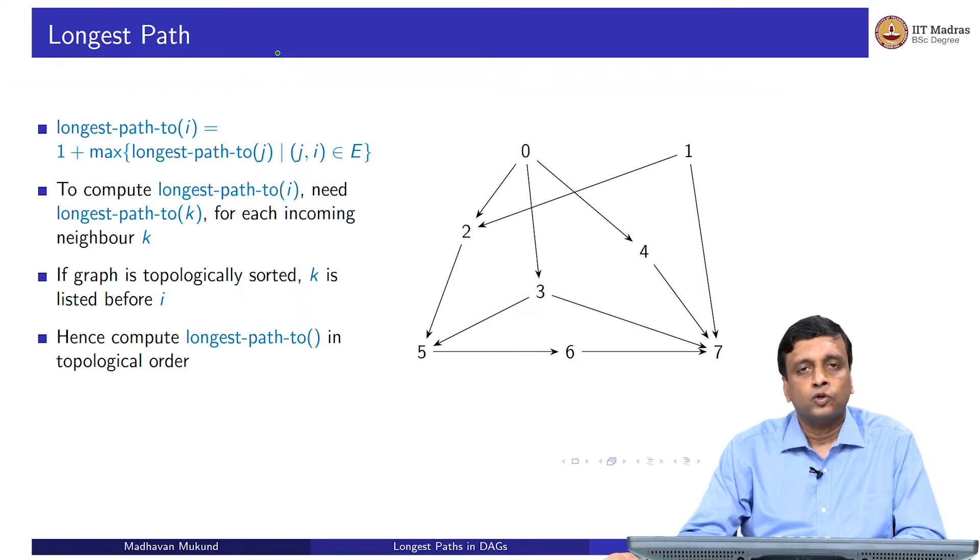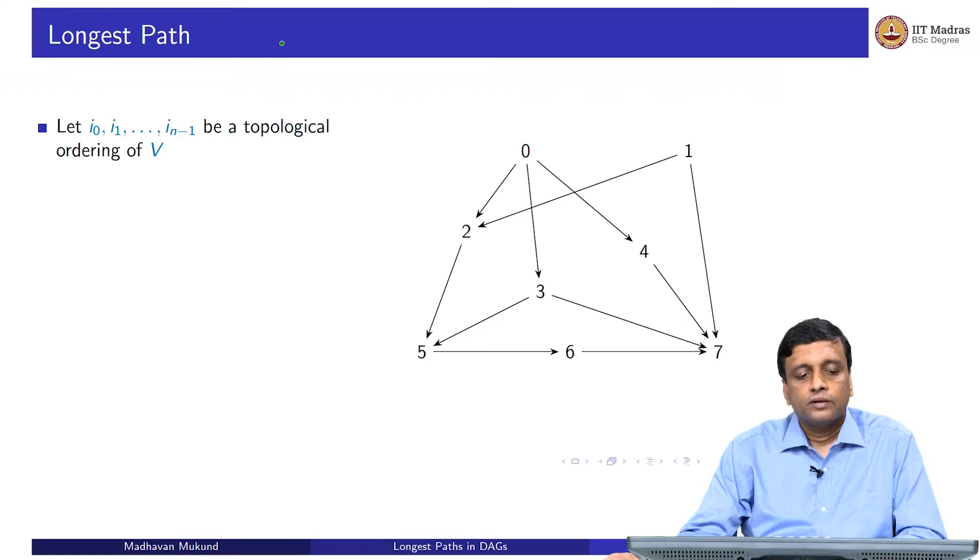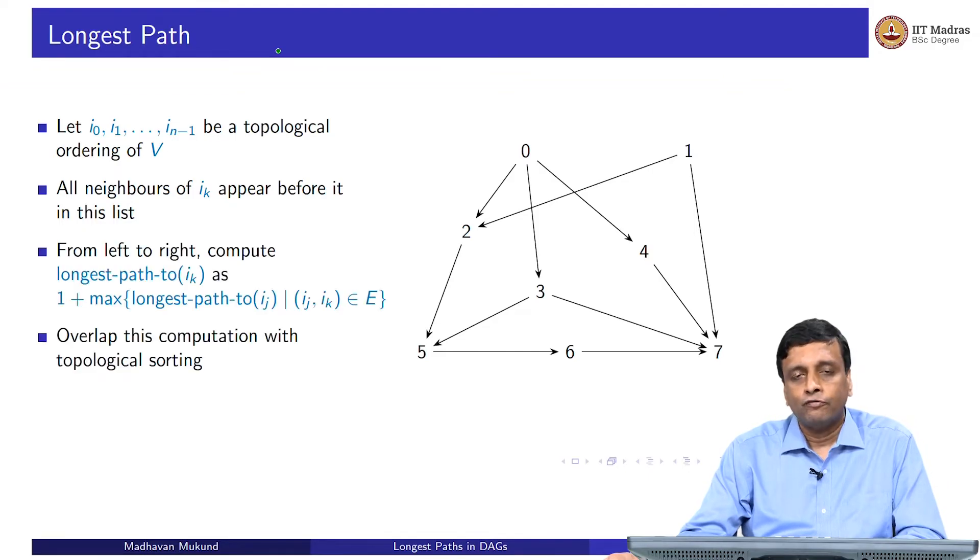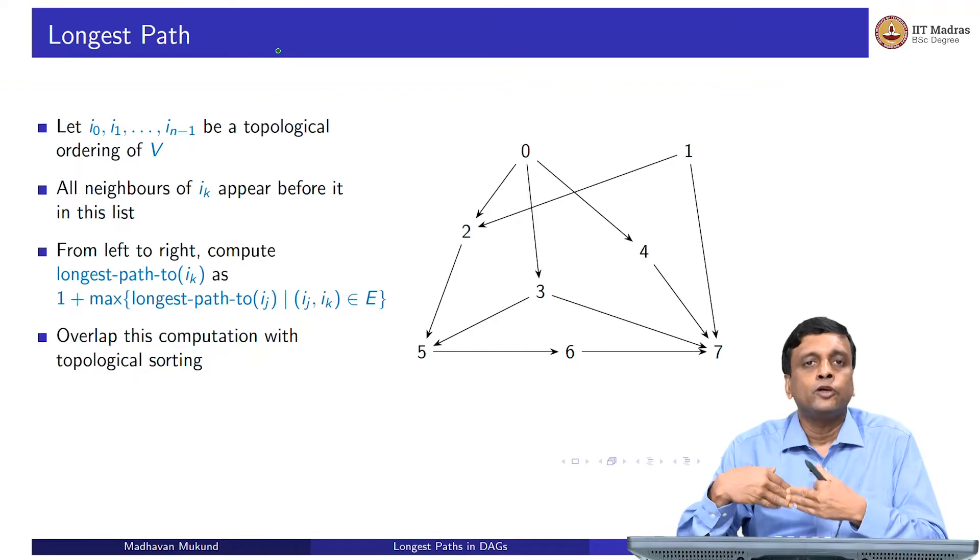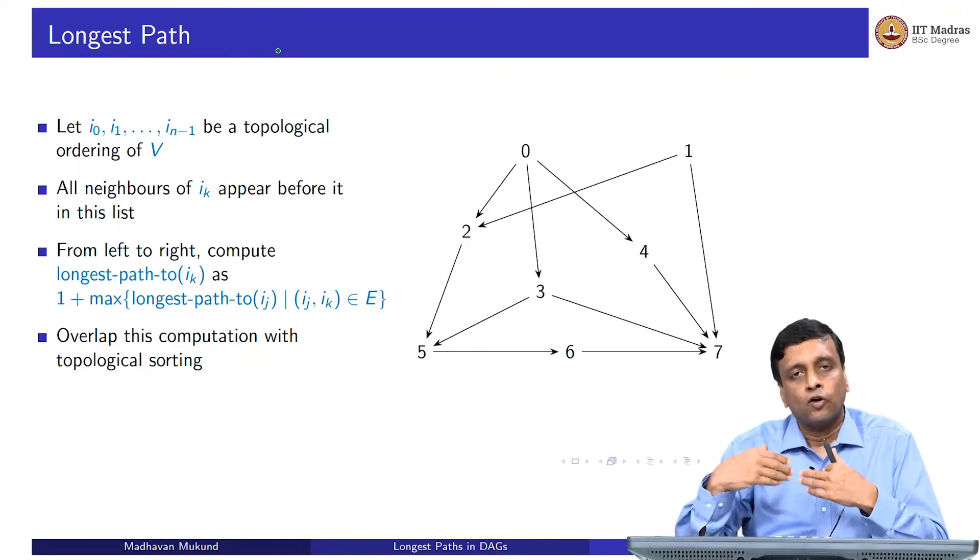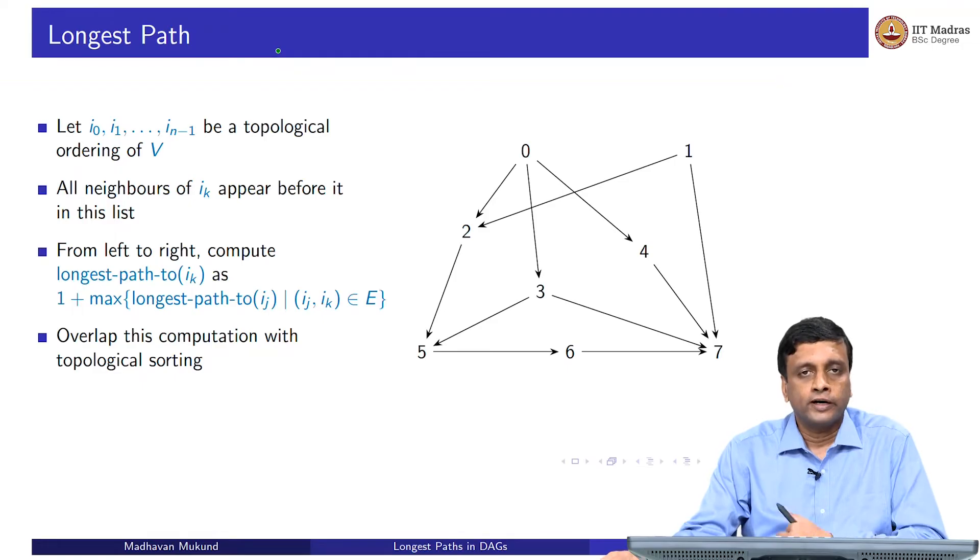What we will do is compute longest path in the topological order. Let us assume that we have some topological ordering of our vertices. Then we know that every vertex in this list has all its neighbors appearing before it. We can go from left to right and do this. We do not have to first compute the topological order and then scan it again. As we are computing the topological order, at any inductive point, everything that I depend on has been enumerated before me. So I can inductively compute the longest path along with the topological ordering in one single pass.